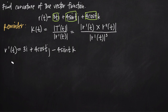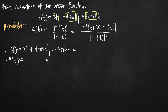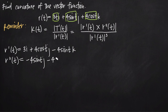Now we need the second derivative r''(t), taking the derivative of r'(t). The derivative of 3 is 0, so that term drops away. The derivative of 4cos(t) is negative 4sin(t), giving us negative 4sin(t) times j. The derivative of negative 4sin(t) gives us negative 4cos(t), so we get minus 4cos(t) times k.